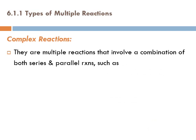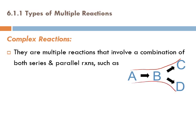Then we have complex reactions — multiple reactions that involve a combination of both series and parallel reactions. Looking at one path, it is a reaction in series; looking at another path, we have reactions in parallel. They are complex because both types are present together and cannot be separated.